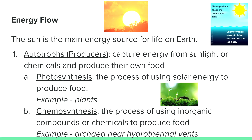While you should know this from the cellular energy unit, the Sun is the main energy source for life on Earth. Autotrophs, also called producers, are organisms that capture energy from sunlight or chemicals and produce their own food. Photosynthesis is the process of using solar energy to produce food and occurs in plants, and chemosynthesis is the process of using inorganic compounds or chemicals to produce food and occurs in organisms like the archaea near hydrothermal vents.